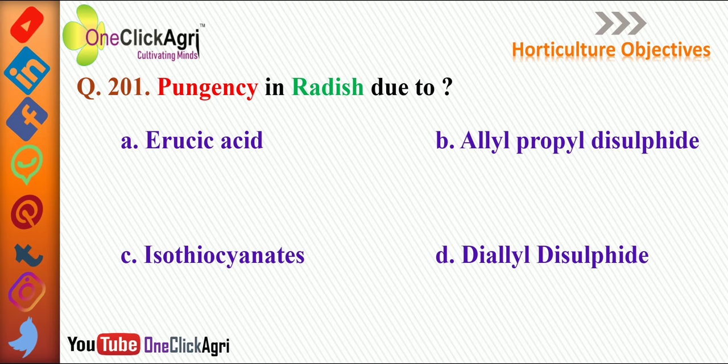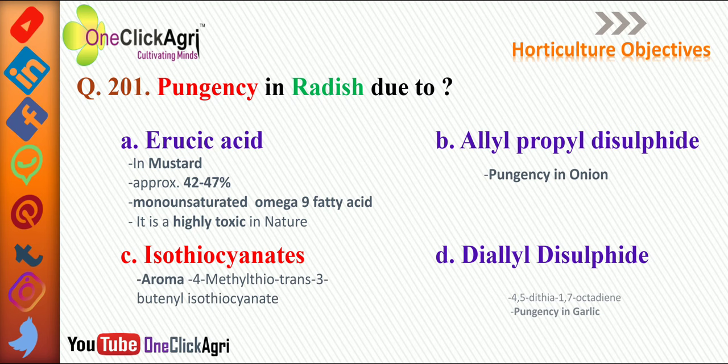Pungency in radish is due to isothiocyanates. The aroma of radish is due to 4-methylthiotrans-3-butanyl isothiocyanate.